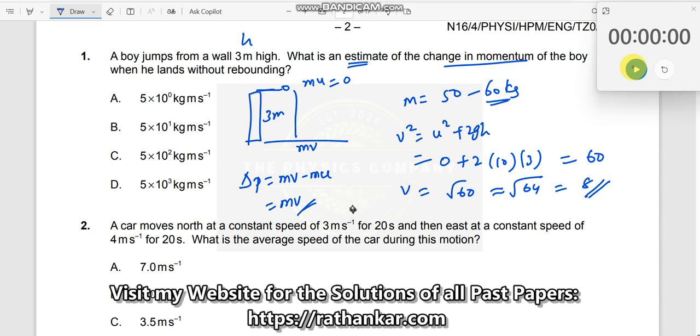So 60 multiplied by 8, the max, the max would be 480 kg meter per second. So this is the maximum momentum a person can have as an estimation.